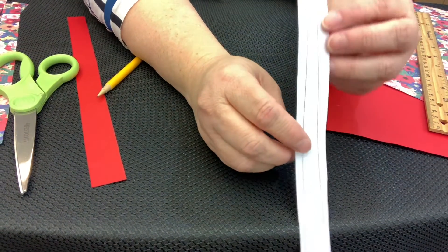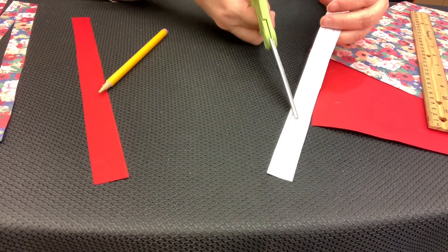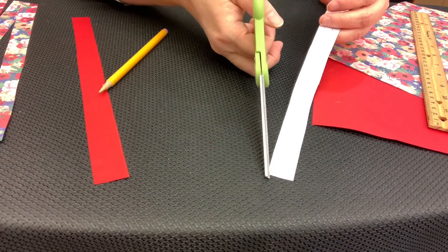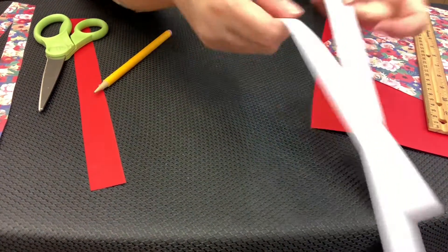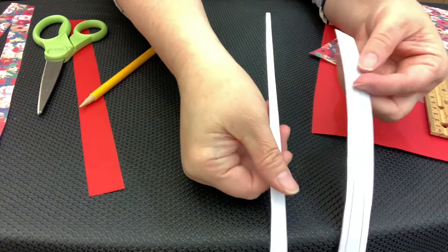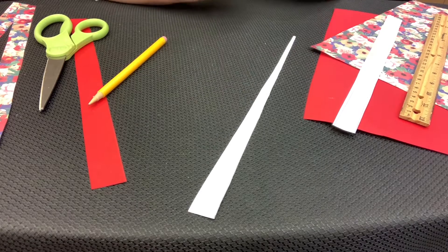And then you cut along your lines. And once you cut it out, it will look like a very long triangle. You can either have a point or you can have the flat space on the top that I have.